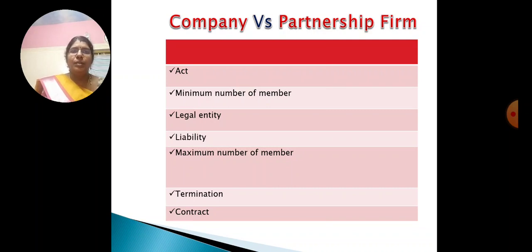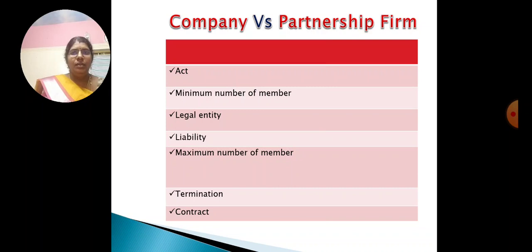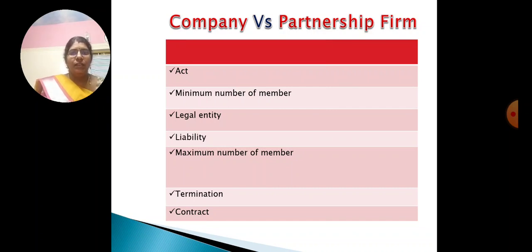Maximum Number of Members: In case of partnership, the number of members must not exceed 20 in case of banking business and 10 in other business. But in a company, a private company cannot have more than 200 members, and a public company may have as many members as it desires. Termination: A partnership firm stands dissolved in the event of death, retirement, or insolvency of a partner or partners. But in a company, the death of a shareholder will not affect the life of the company.